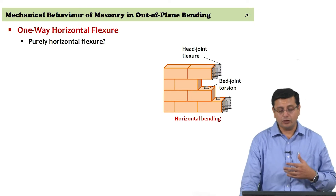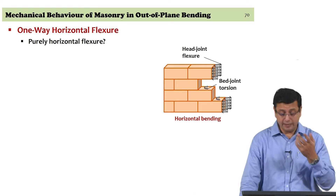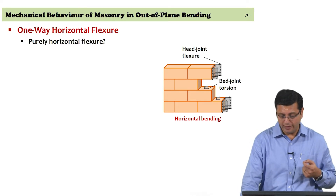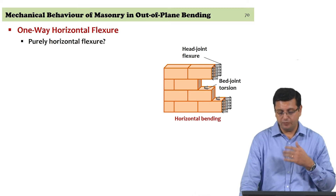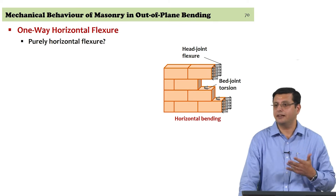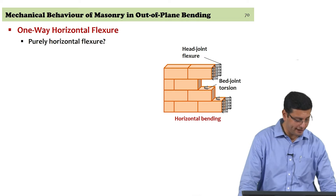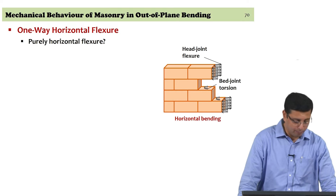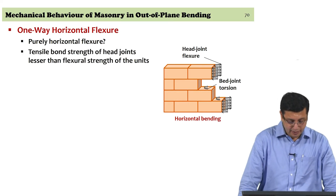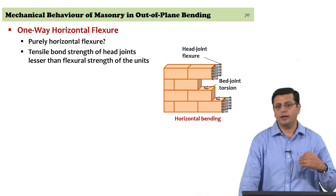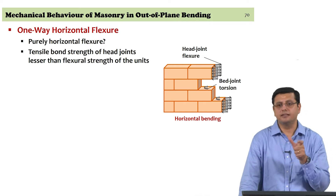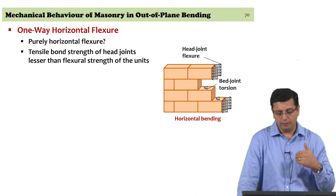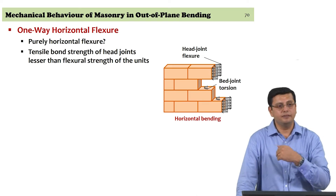We did look at the material behavior and material strengths we have to consider, particularly with horizontal bending or one-way vertical bending — the material factors that start playing a role. The head joint flexure and the bed joint torsion in a wall start becoming important as far as one-way bending is concerned. To understand how failure will propagate, it is the relative strengths that finally matter.